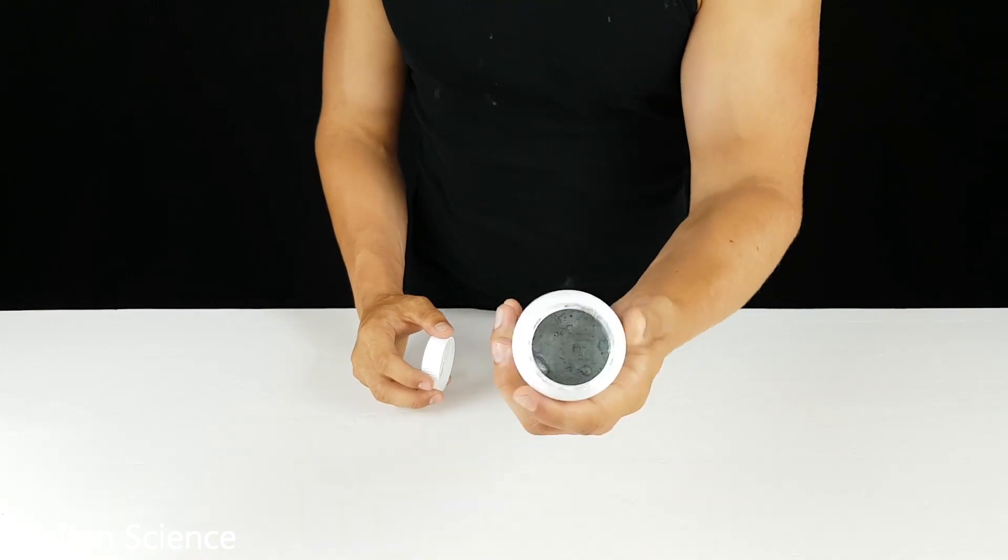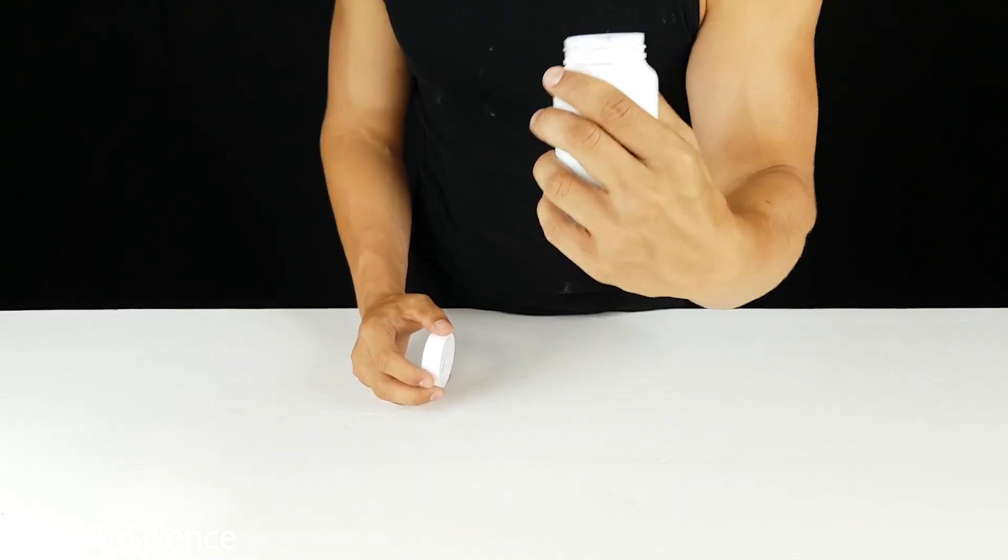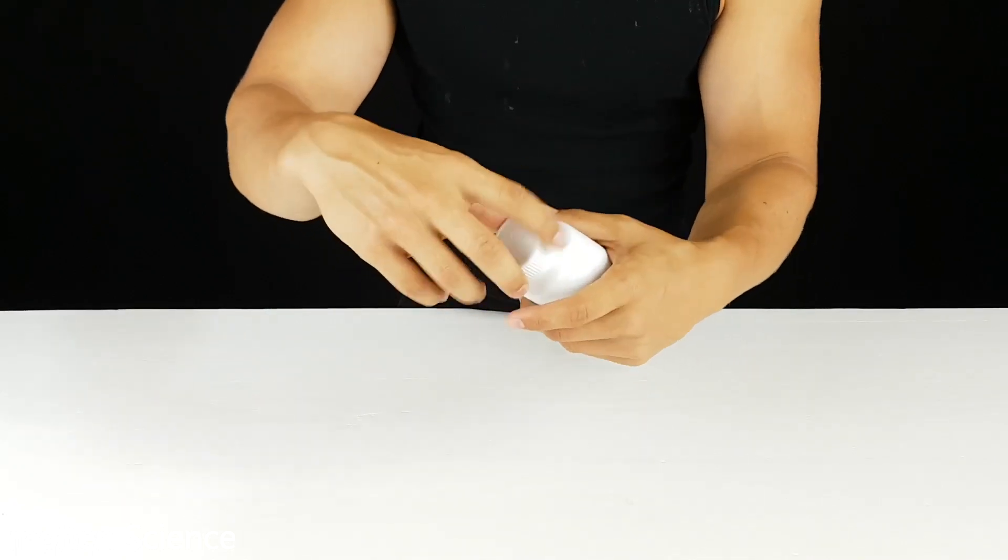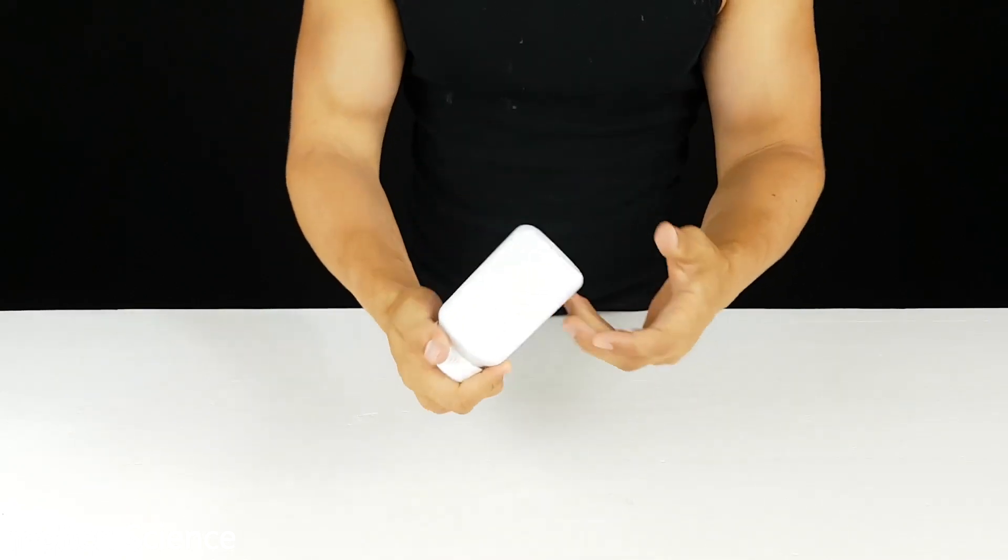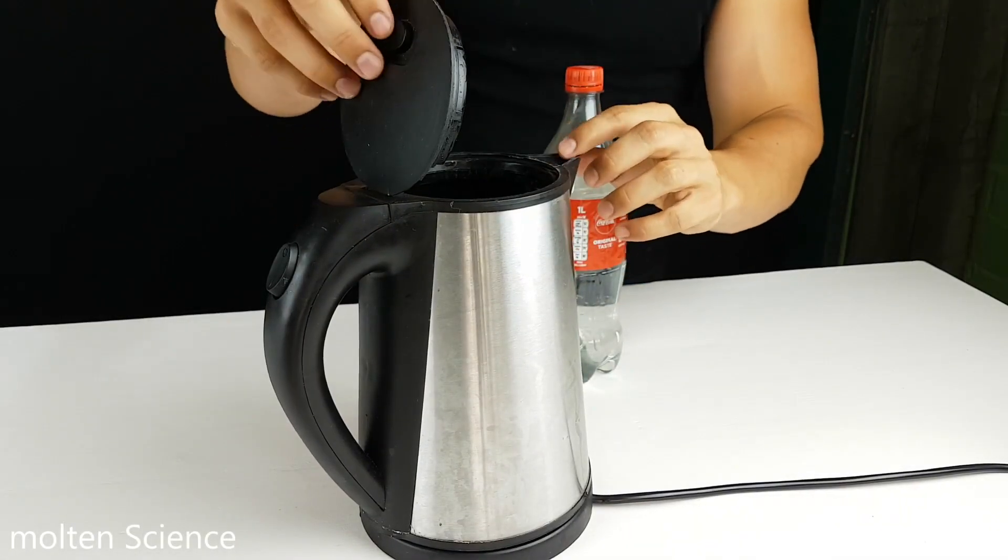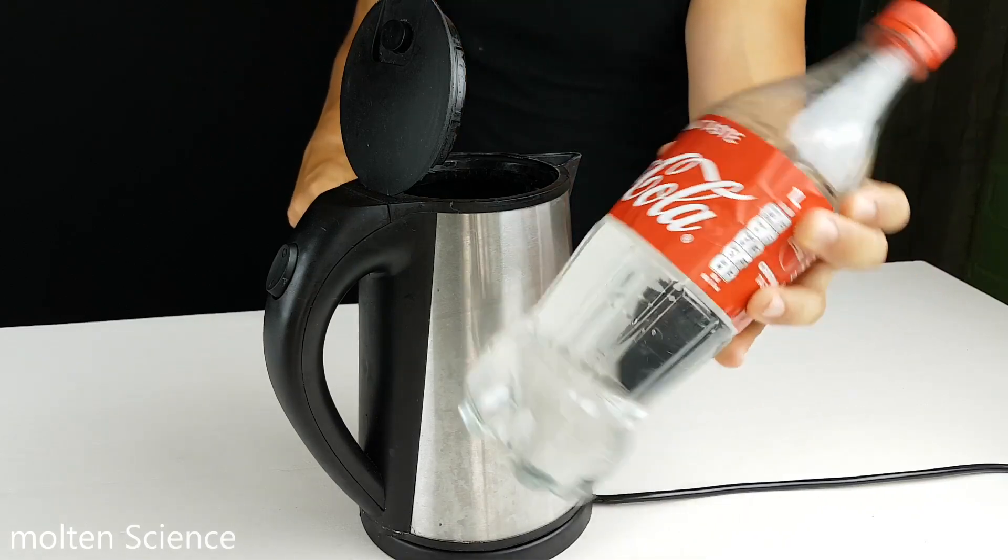But before we can use the gallium, because it's solid now, we have to melt it. So we have to boil some water and then put it in so it becomes soft. Okay, first we have to boil some water, just regular water.